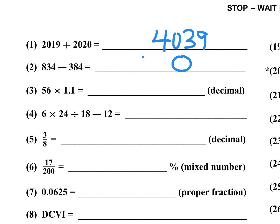Number three — you're multiplying by 1.1. If you multiply by 11 times 56, you write the 6 down first, 5 plus 6 is 11, so you write a 1 and carry a 1. 5 plus 1 is 6, but remember it's 1.1, so you have to place the decimal there. The answer is 61.6.